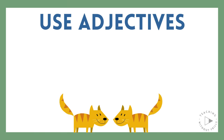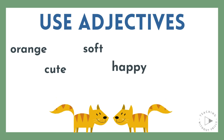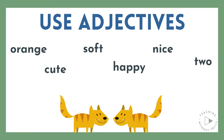Can you use adjectives to describe these cats? Pause here to think, or keep watching. Adjectives can describe how something looks, so you might have said orange or cute. Adjectives can also describe how something feels, so maybe you said soft. They can also tell how something acts, like happy or nice. Adjectives can even tell how many, so two is an adjective also.